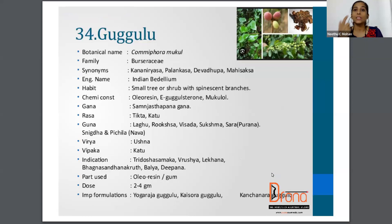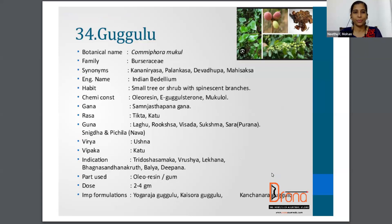The next drug is Guggulu, botanical name Commiphora Mukul, family Burseraceae. Synonyms are Kananiriasa, Palankasha, Devadupa, etc. The English name is Indian Bdellium, the part used is Oleoresin or Gum, and the dosage is 2 to 4 gram.